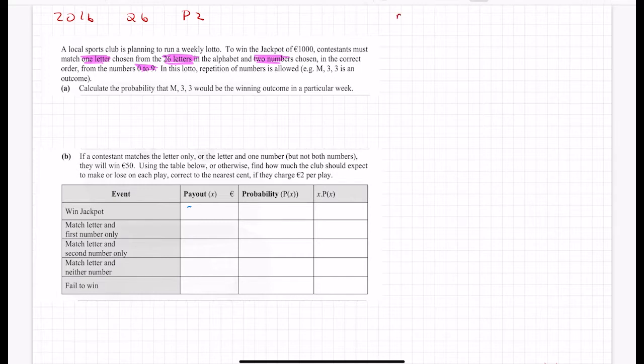The numbers are from 0 to 9. One letter and you have 26 of them so you have a 1 in 26 chance. You need two numbers. The digits 0 to 9, be careful because that's actually ten digits. It's very easy to put down nine, so you have ten digits to choose from. For each number you have a 1 in 10 chance. Chosen in the correct order from the numbers 0 to 9. In this lotto repetition is allowed. Very important that you know whether repetition is allowed or not.